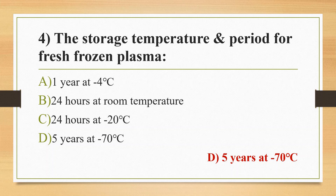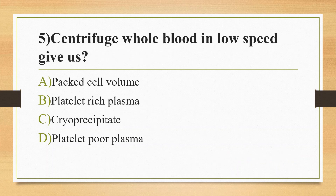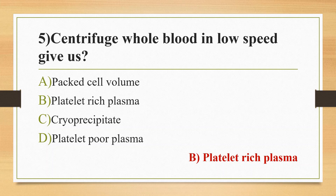Fifth question: centrifugation of whole blood at low speed gives — option A: packed cell volume, option B: platelet rich plasma, option C: cryoprecipitate, option D: platelet poor plasma. The answer is platelet rich plasma, which contains about one lakh platelets. When we centrifuge platelet rich plasma at high speed, we get platelet concentrate and platelet poor plasma. This platelet poor plasma is stored as fresh frozen plasma. In MCQ, the speed of centrifugation is very important.